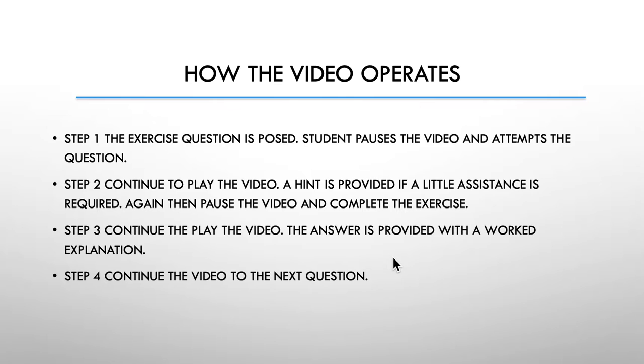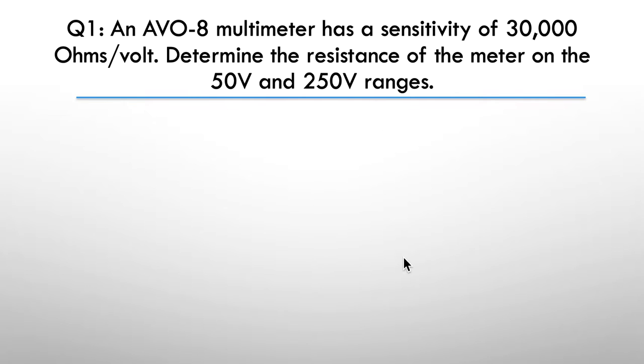Here's our first question. An AVO 8 multimeter, which is an analog type multimeter, has a sensitivity of 30,000 ohms per volt. Determine the resistance of the meter on the 50 volt and on the 250 volt ranges.